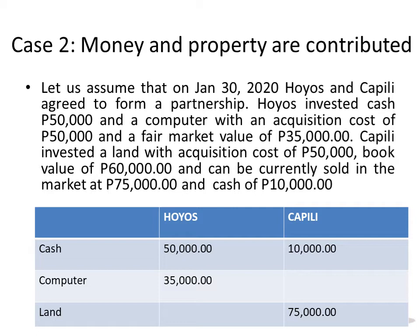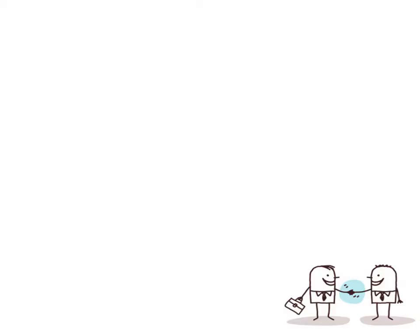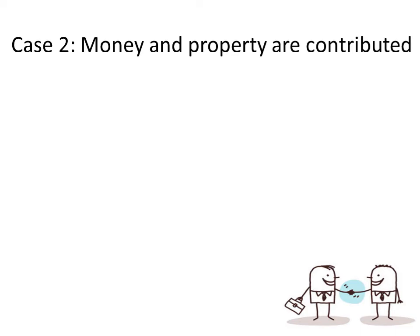The entry: cash $50,000 for Huyoz, computer $35,000 for Huyoz, Kapili cash $10,000, and LAN $75,000 — because currently sold means fair market value, same as computer fair market value of $35,000. This is a compound entry. We debit cash $60,000 (Huyoz $50,000 + Kapili $10,000), computer $35,000, and LAN $75,000. We credit Kapili's capital $85,000 and Huyoz's capital $85,000 — to record the initial investment of the partners.